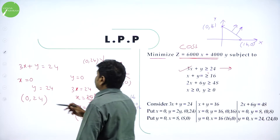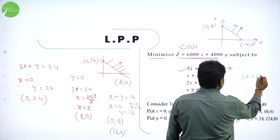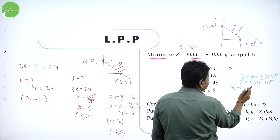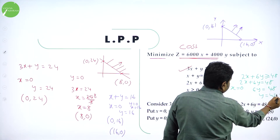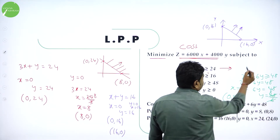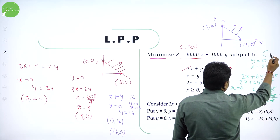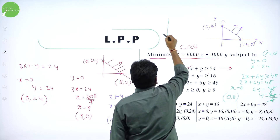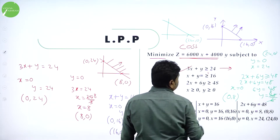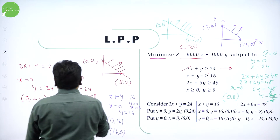Now the third constraint line using a different color: 2X + 6Y = 48. Put X = 0: 6Y = 48, so Y = 8, giving point (0, 8). Put Y = 0: 2X = 48, so X = 24, giving point (24, 0). This line also shades above since the constraint is greater than or equal to. Now all three lines are plotted on a single graph.